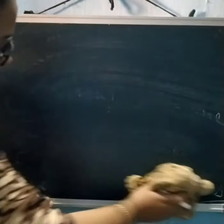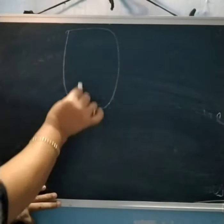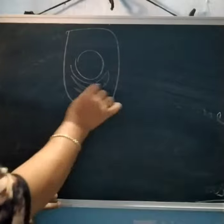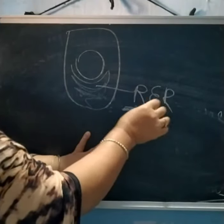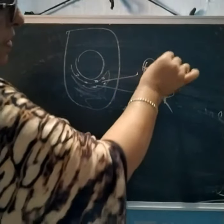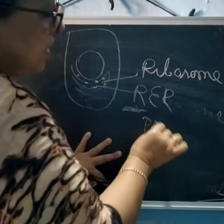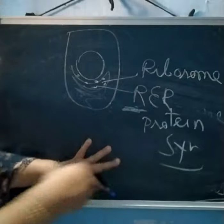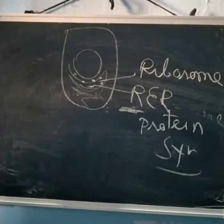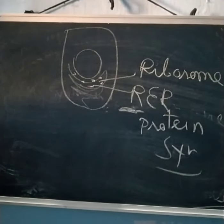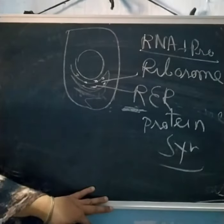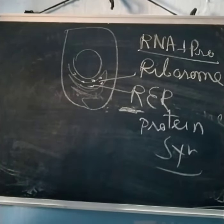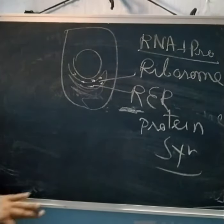Now let's look at ribosomes. In a cell there is a nucleus and the RER — rough endoplasmic reticulum — which contains ribosomes on its surface. Ribosomes are extremely small, rounded bodies found either free in the cytoplasm or attached to the endoplasmic reticulum. They are composed of RNA (ribonucleic acid) and protein, and they are the site of protein synthesis — hence called protein factories.